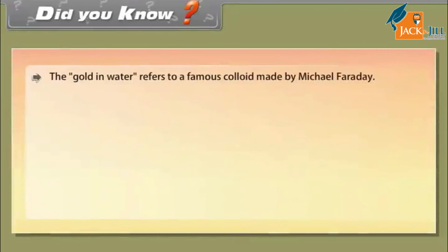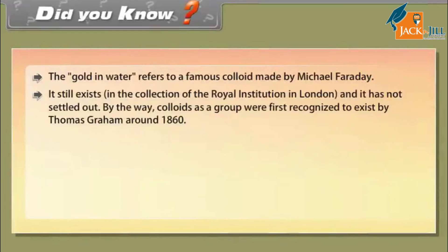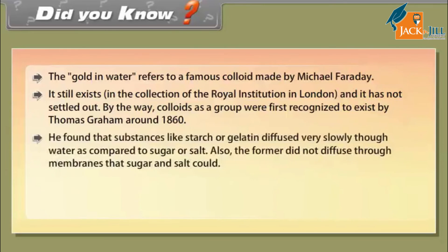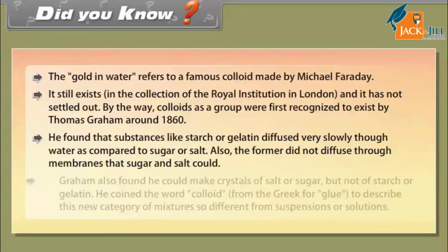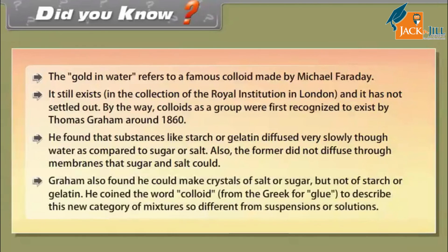Did you know? The 'gold in water' refers to a famous colloid made by Michael Faraday. It still exists in the collection of the Royal Institution in London and has not settled out. Colloids as a group were first recognized by Thomas Graham around 1860. He found that substances like starch or gelatin diffused very slowly in water compared to sugar or salt, and did not diffuse through membranes. Graham coined the word 'colloid' from the Greek for 'glue' to describe this new category of mixtures.